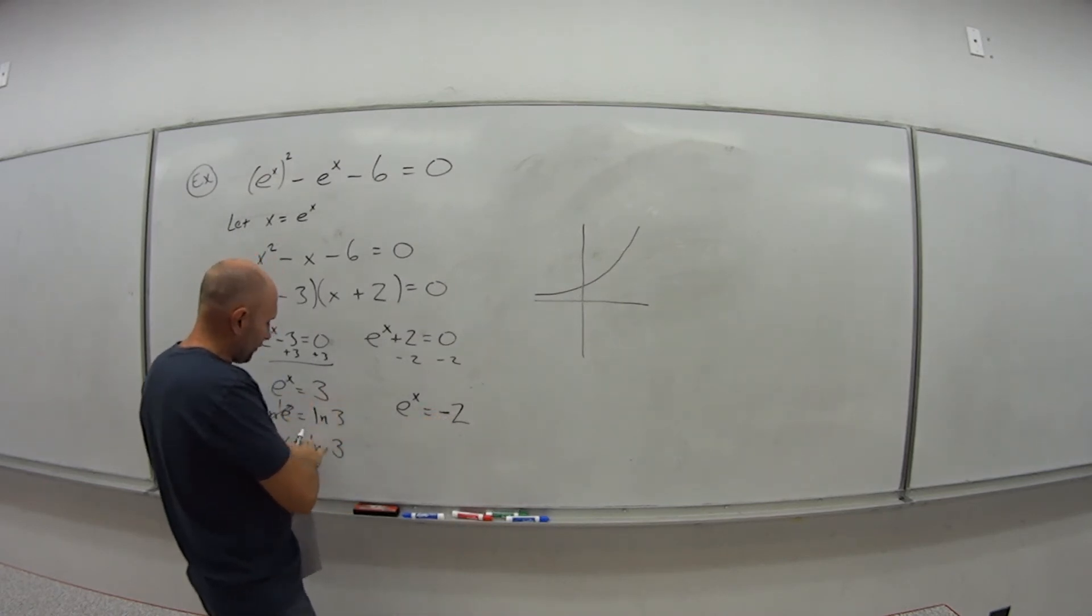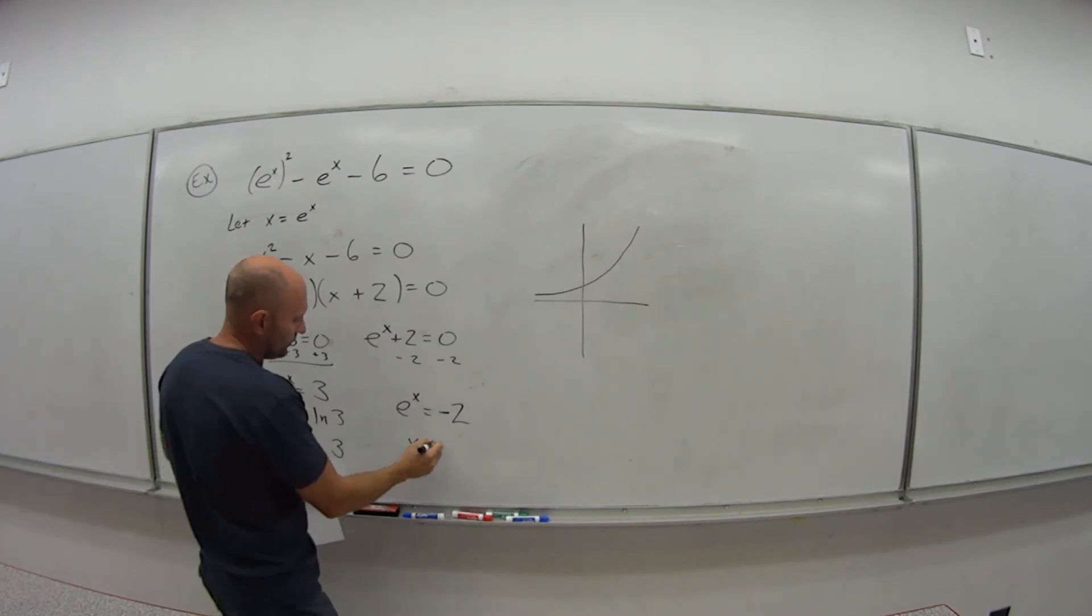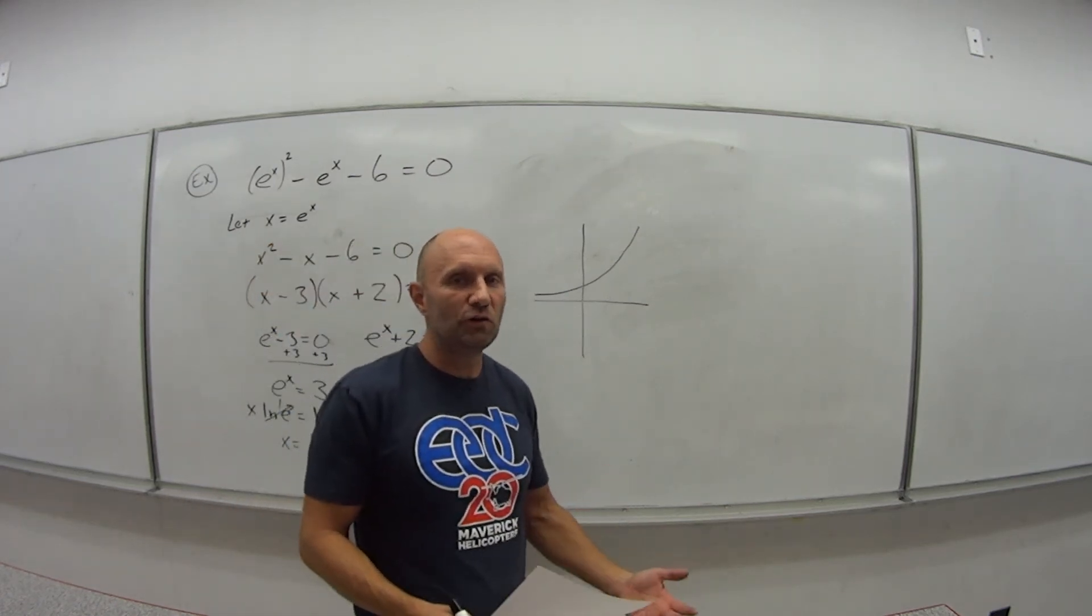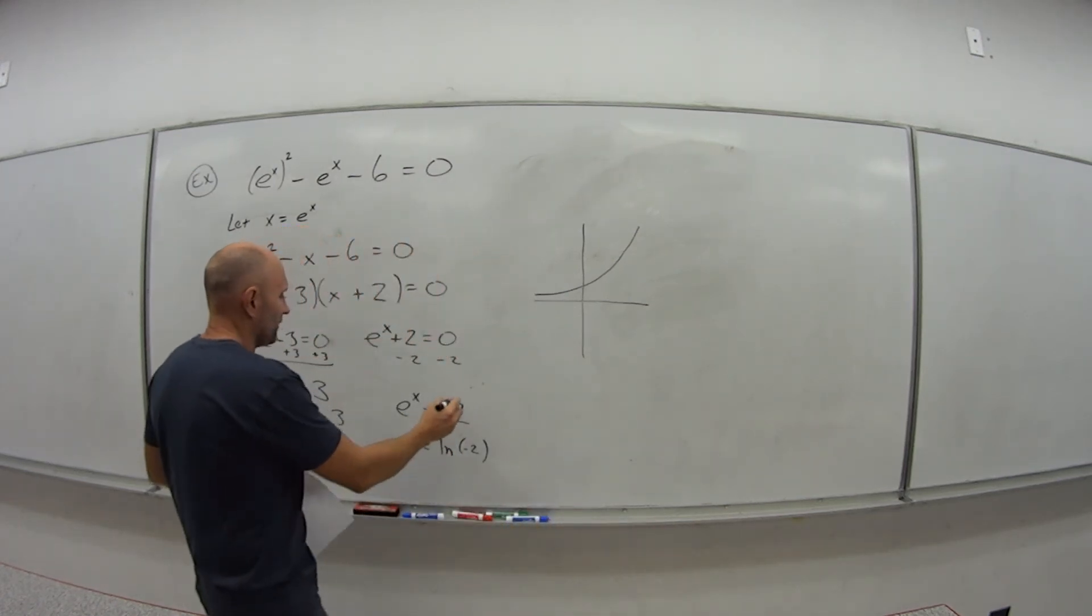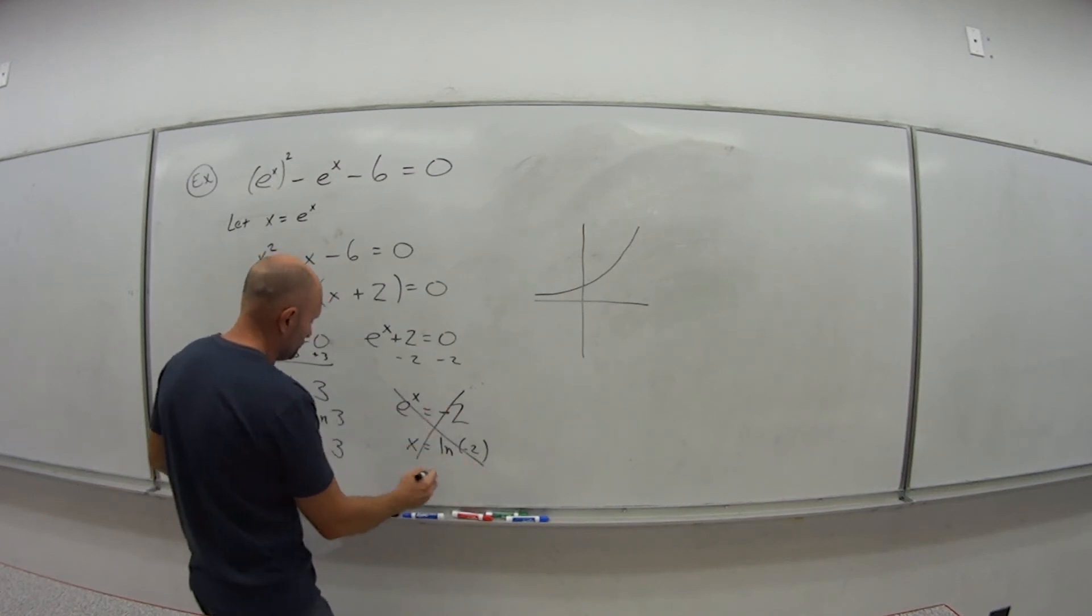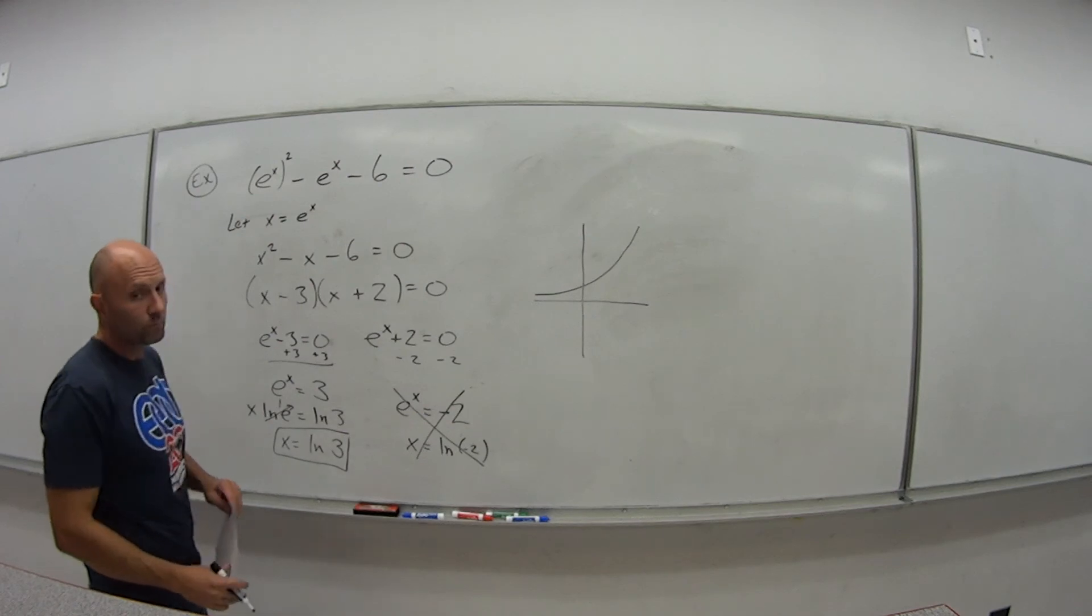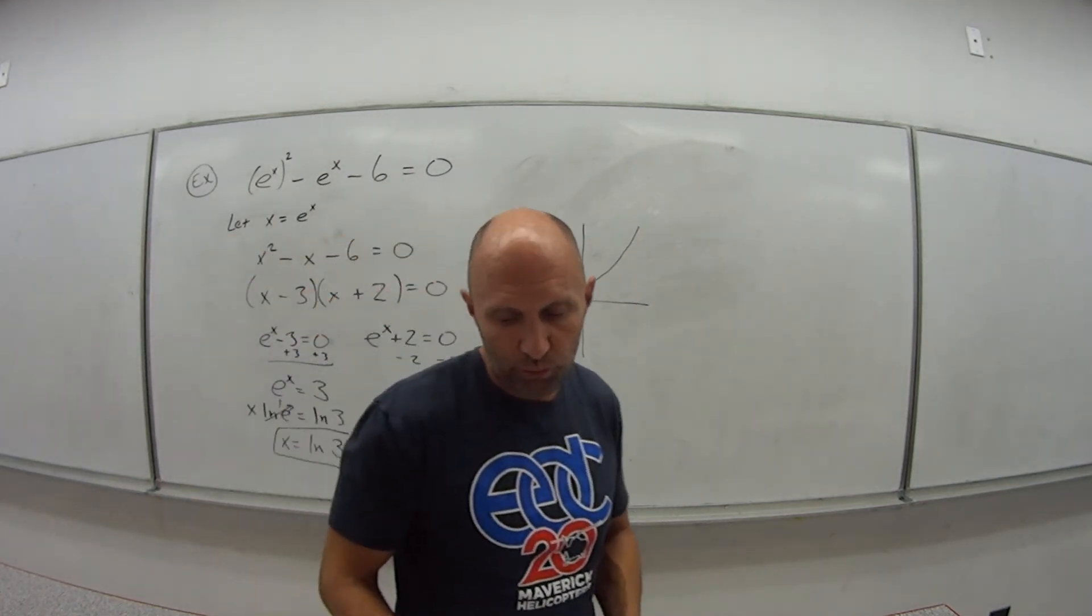Even if you wanted to solve it the same way as here, what would you get? You'd get x is equal to the natural log of negative 2. If you plug that in on your calculator, it's going to tell you error. Which means this one doesn't give us any solution. So our only answer for this equation would be x is equal to the natural log of 3.